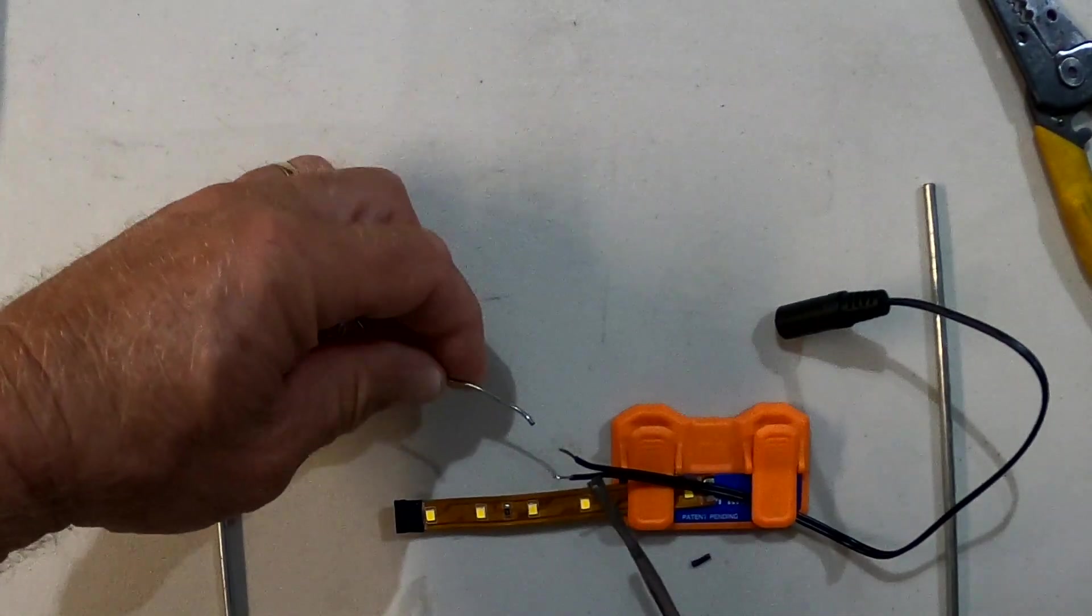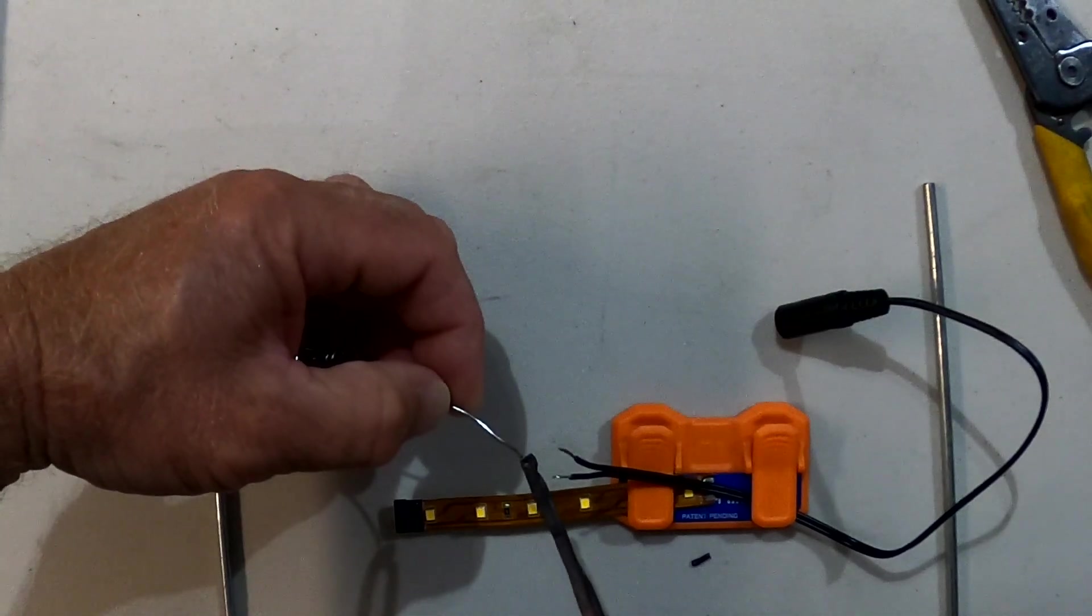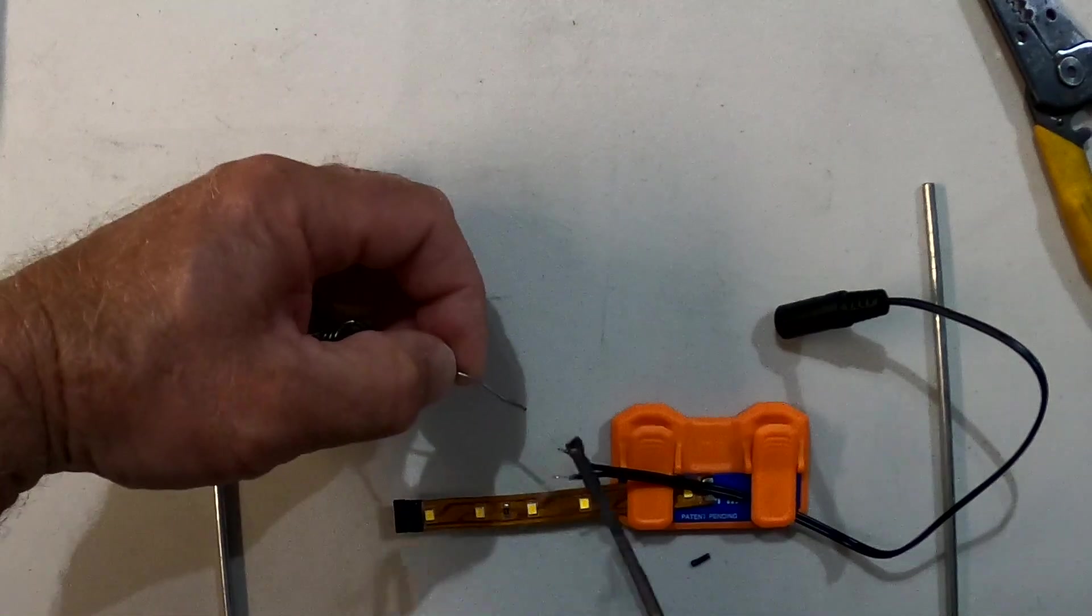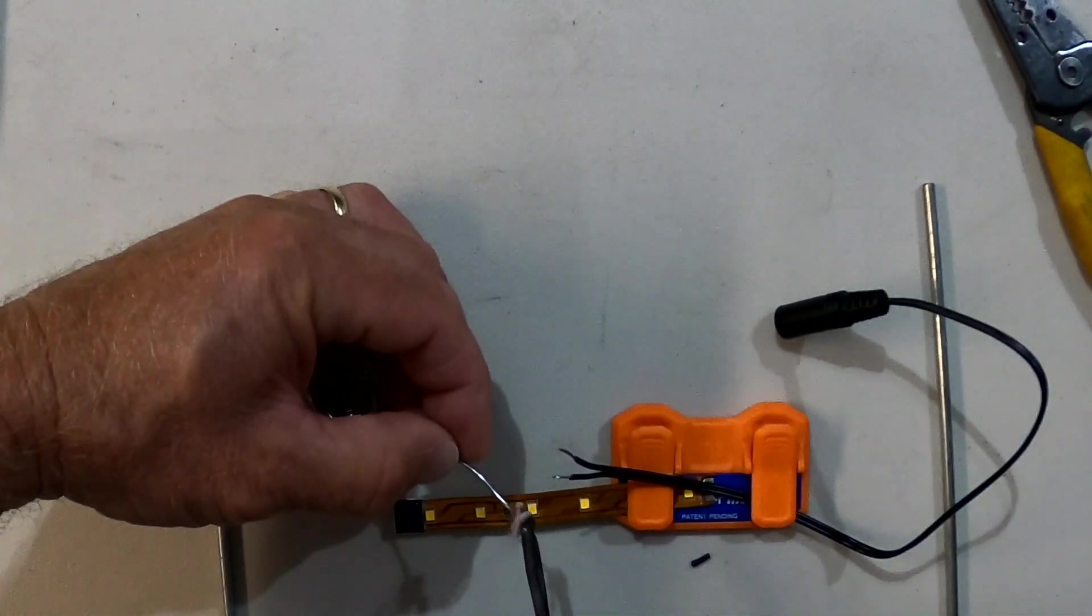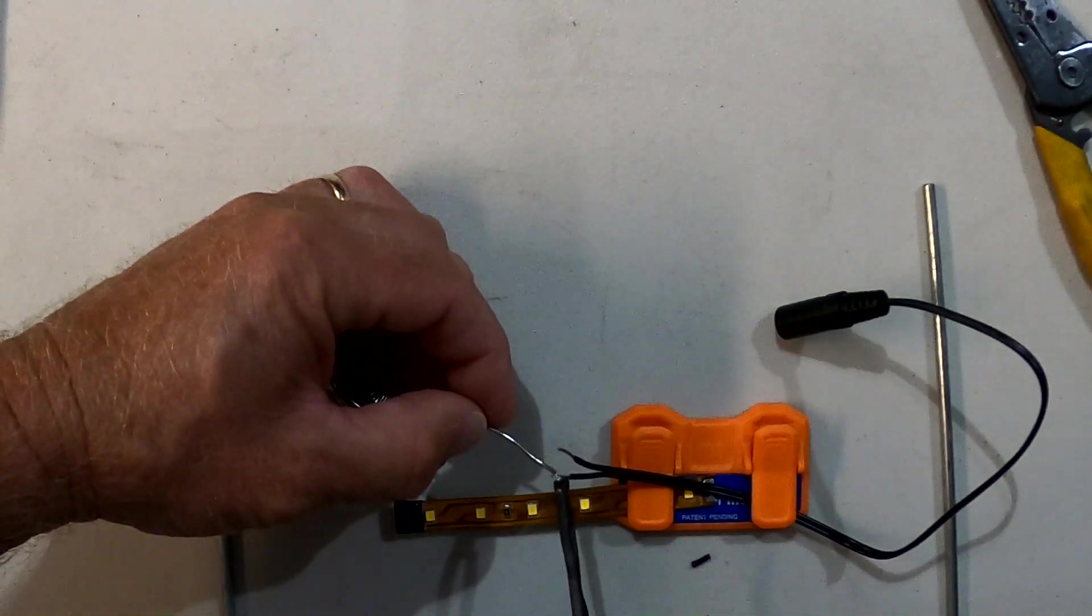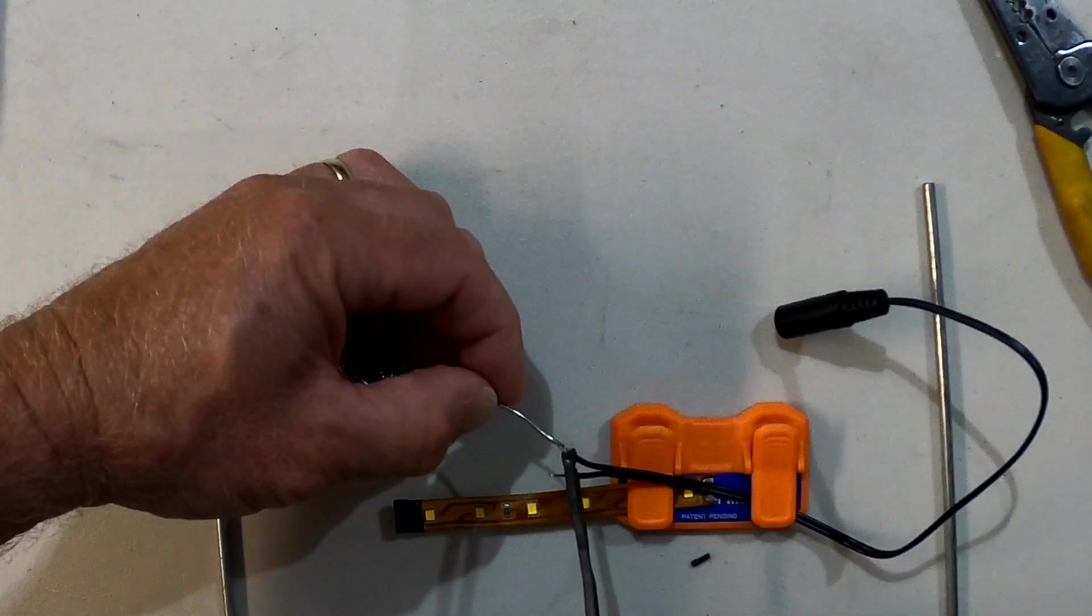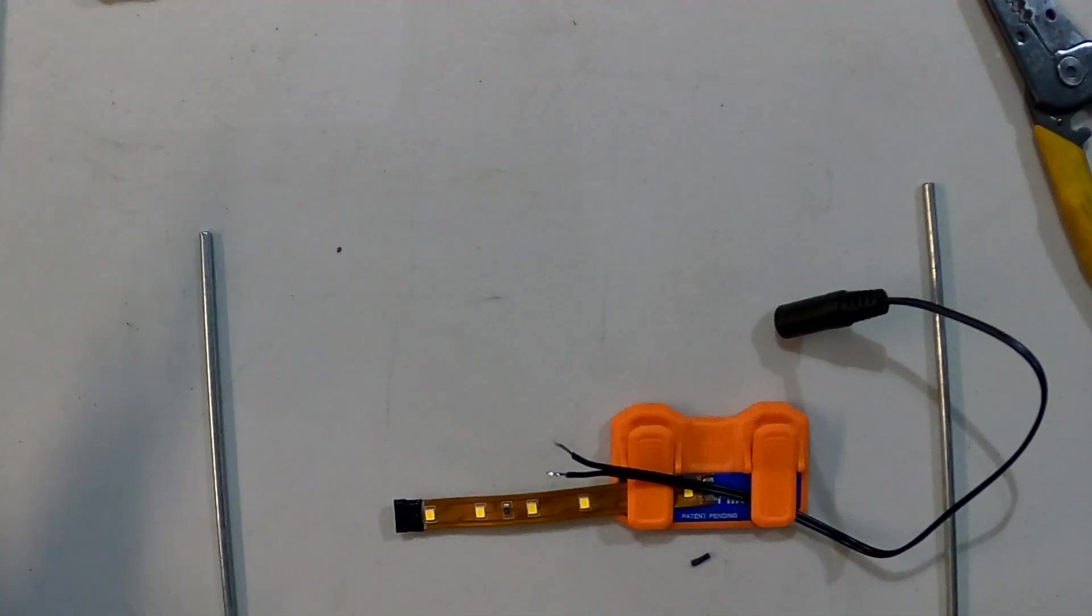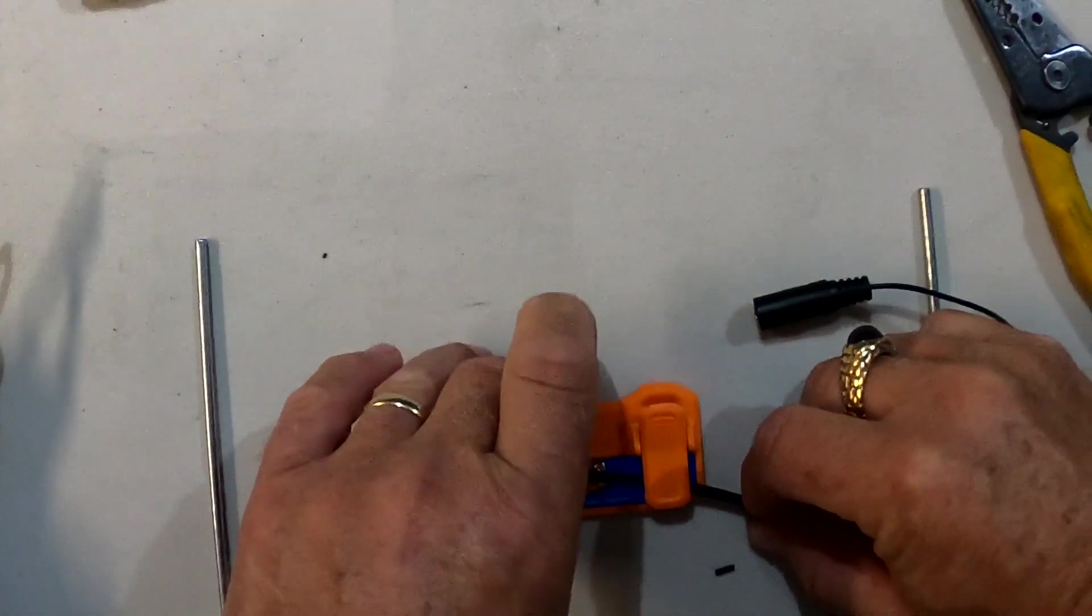What this does is it gets some solder into the strands of your wires. These are fairly tiny wires, I'd say they're like 18 or 20-21 gauge. You want to get your iron nice and hot, get some solder melted on the iron, and just make sure you get solder flowing into the strands of the conductors.